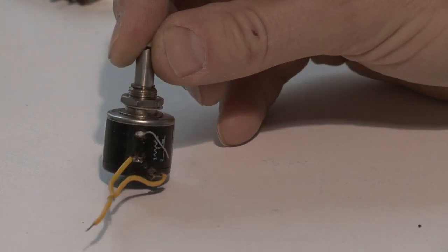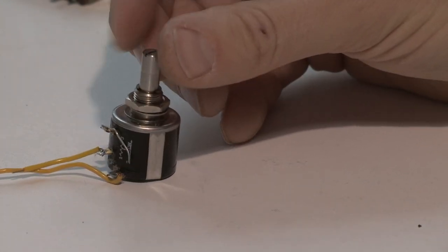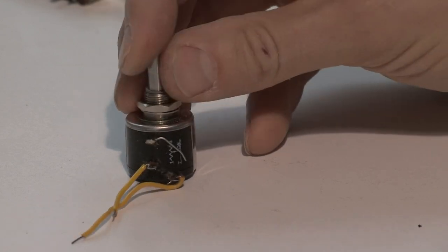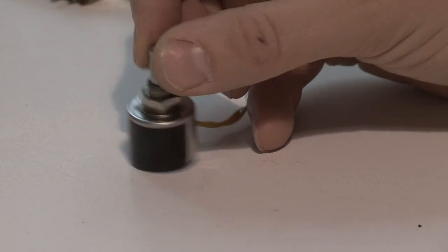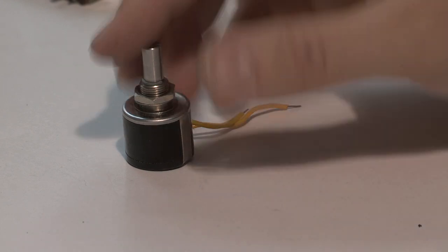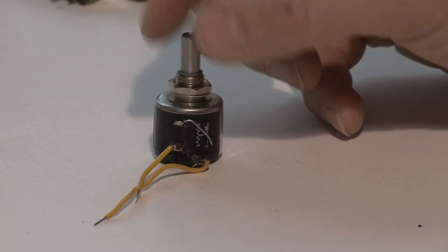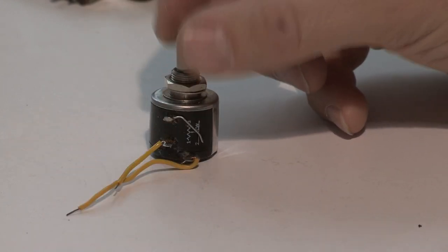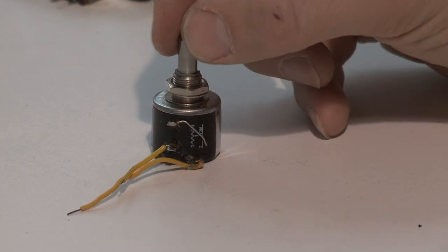And here's an interesting model of a potentiometer. You can actually turn this around 10 turns. So this kind of potentiometer is very expensive, but you can use this for very accurate adjusting of some things. Usually these are used in laboratory equipment or such.